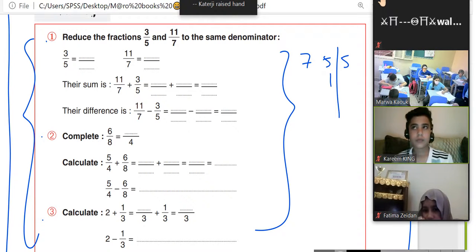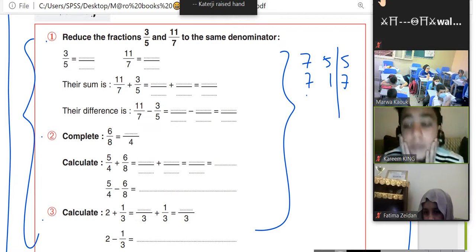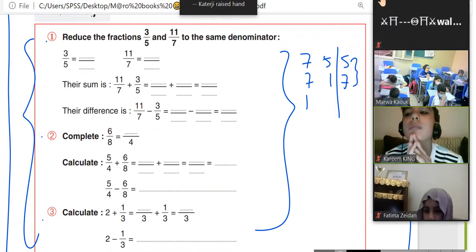I will divide by 5, 1, 7 over 7. It's 1. So the LCM is 35.